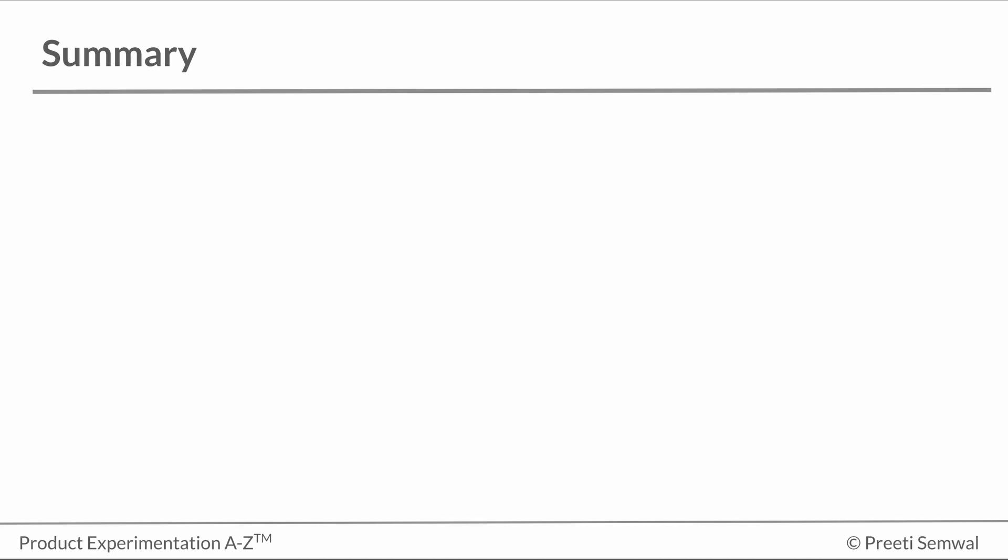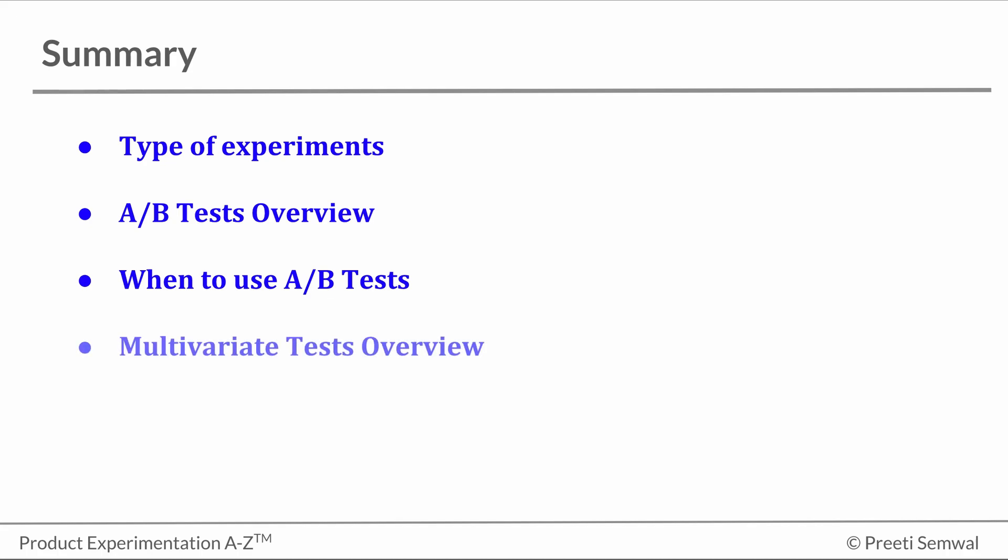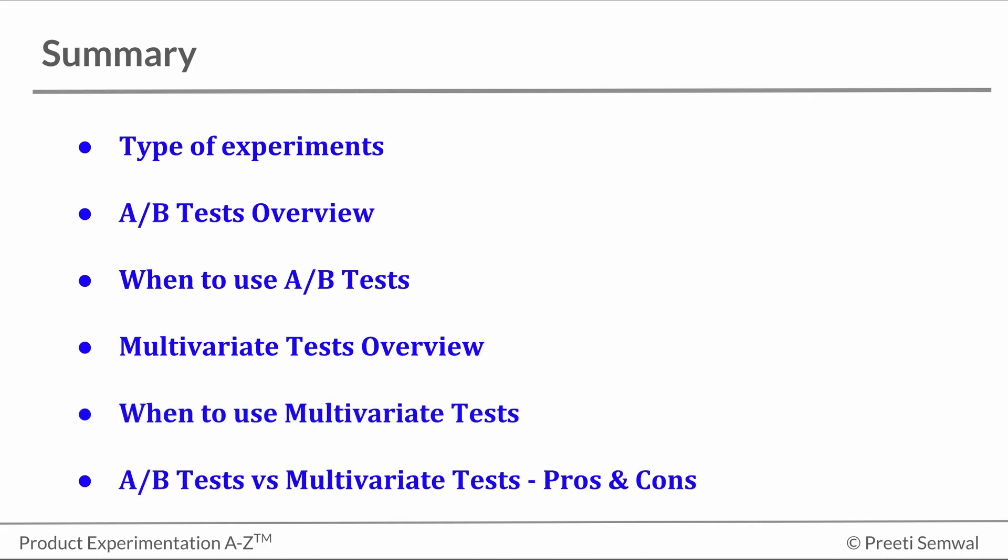We went through quite a few new concepts in this tutorial. So let's do a quick recap. We learned about the different types of experiments. We did a high level overview of A-B tests. We understood in which scenarios we should use A-B tests. Then we looked at multivariate tests and learned when to use these. Last but not the least, we compared A-B tests and multivariate tests and understood the pros and cons of each.